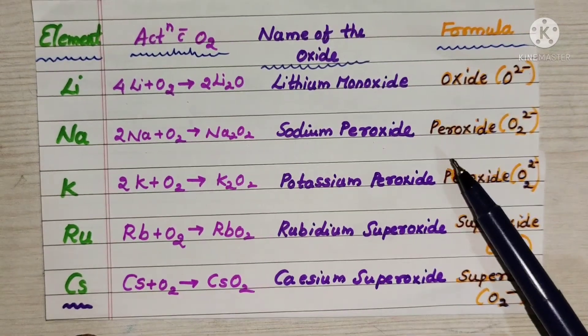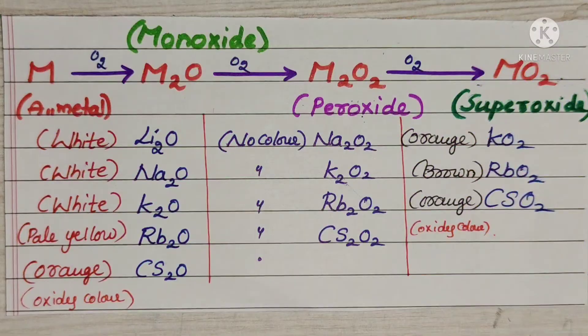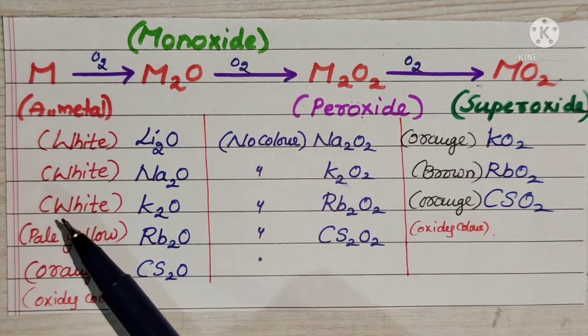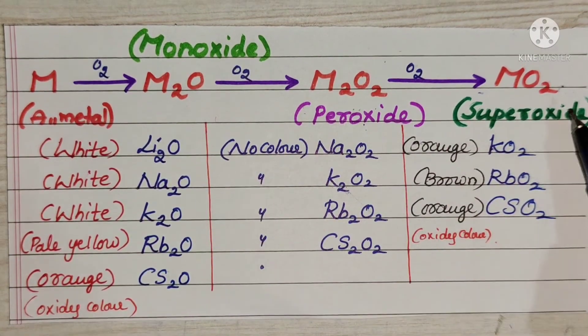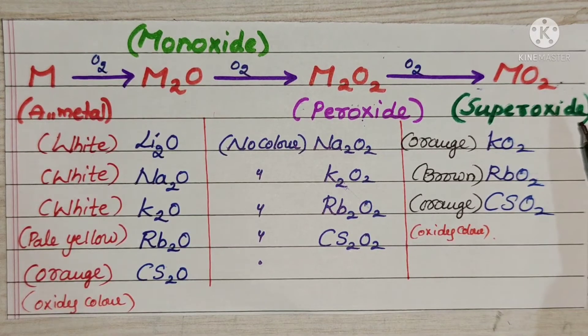This is the concept: monoxide, peroxide, superoxide. Another important information for you. I think you have a complete idea about metals reaction with oxygen. When metal reacts with oxygen it may form different types of oxides.